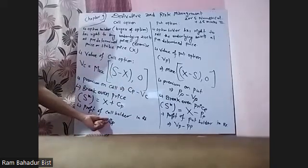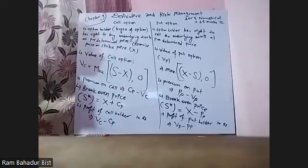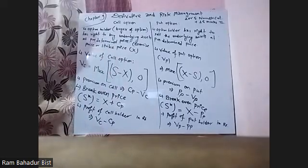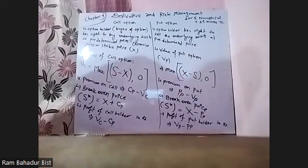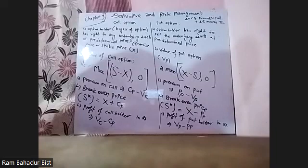Minus CP divided CP into 100 percent. That's right. Yes, that's right. You have to add 5 minutes. That's how you do it. And you have to add this.